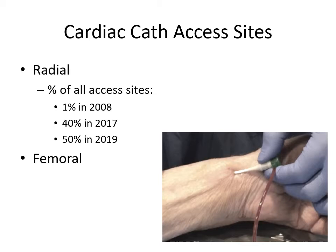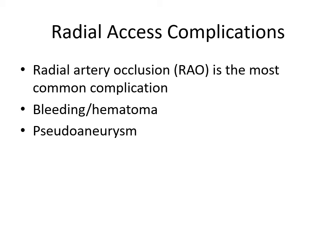Other types of vascular access, such as brachial, subclavian, etc., are far less common and will not be discussed in this video. We will start by discussing some of the radial access complications, the most common being radial artery occlusion. Bleeding and hematoma or pseudoaneurysm are also worth noting and being able to recognize and treat.